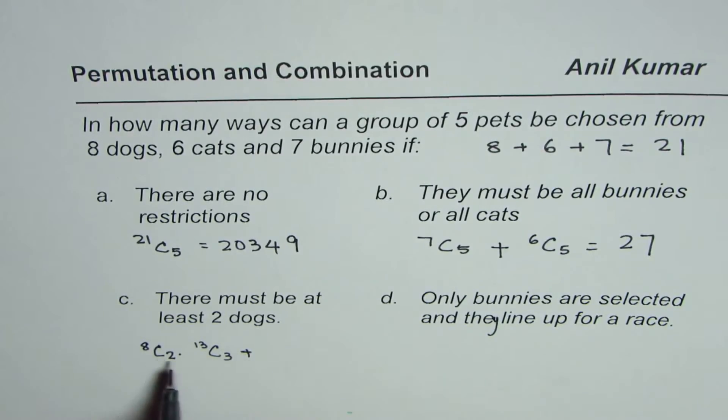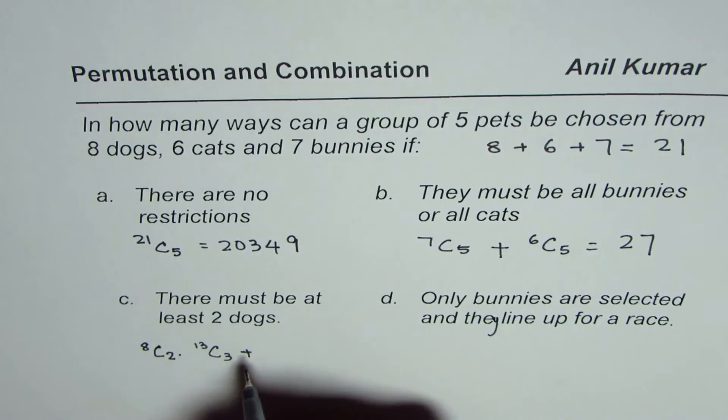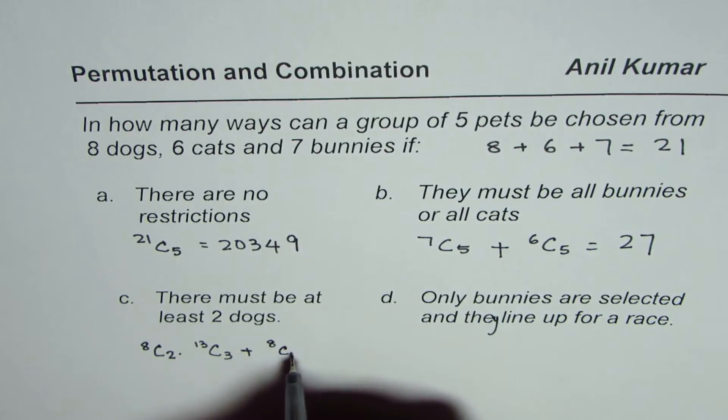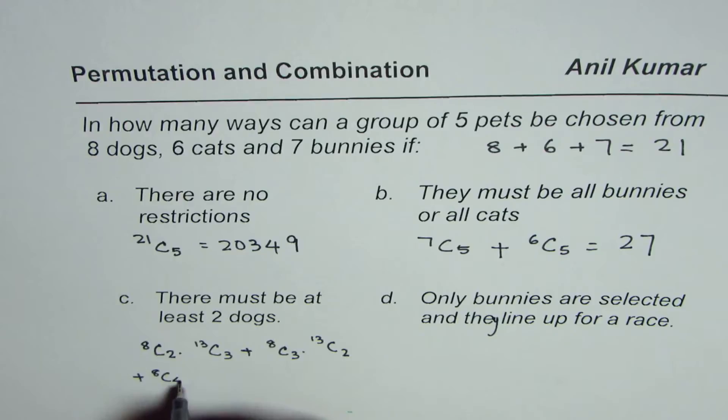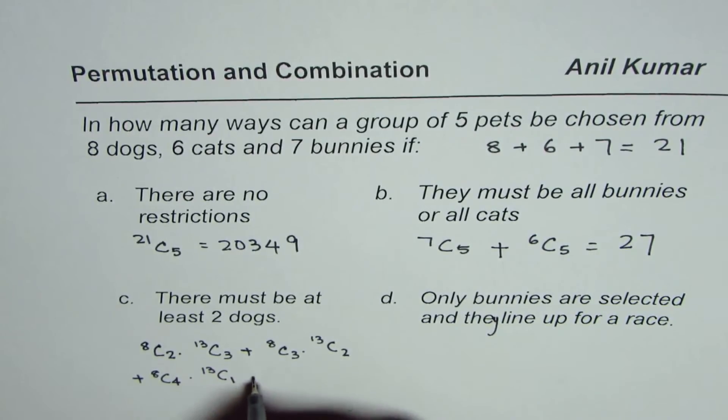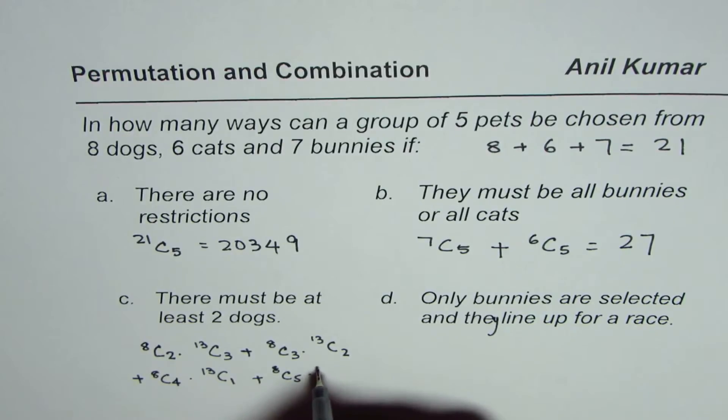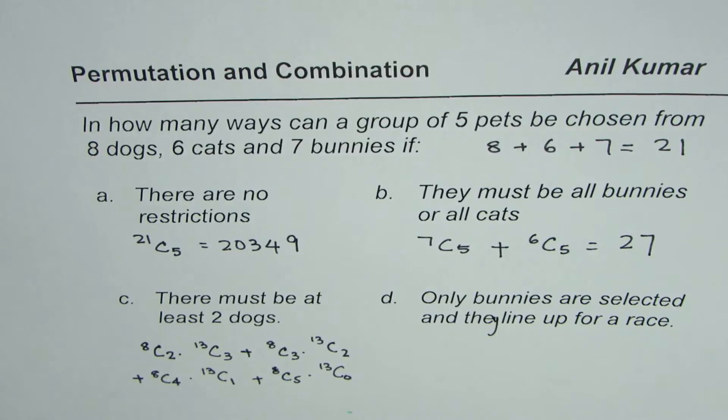The second one will be select 3 dogs. So we have 8C3 and in that case from 13, you need to select 2. Or you could select 4 dogs. So 8C4 and from 13, the pet selected will be 1 or you could select all dogs. So it will be 8C5 and then you don't select any other pet.